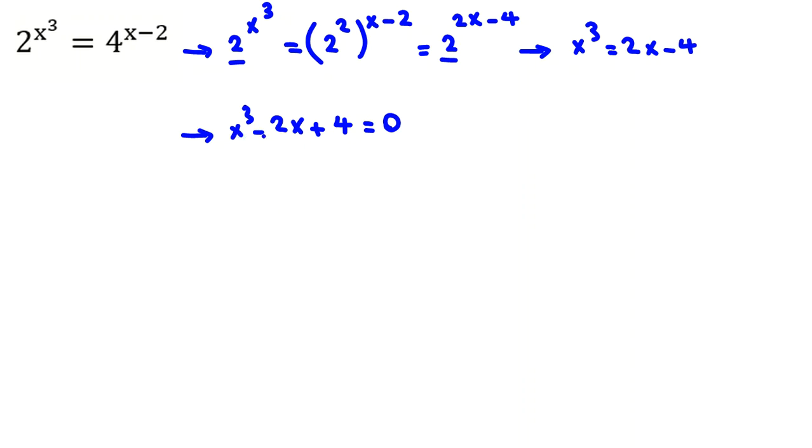If we replace x with 0, doesn't work. x with 1, doesn't work. Negative 1 doesn't work. Replace with 2, doesn't work. So if we replace x with negative 2, it will be (-2)³ minus 2 times (-2) plus 4, which will be -8 plus 4 plus 4 equals 0. So it's one root.